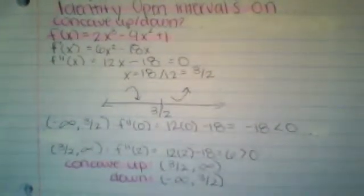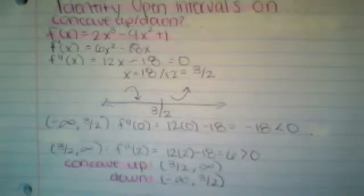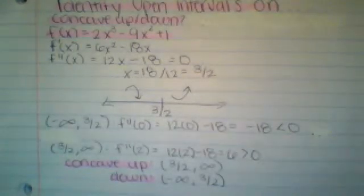To find concavity, we have to find the first derivative. The first derivative equals 6x² - 18x.